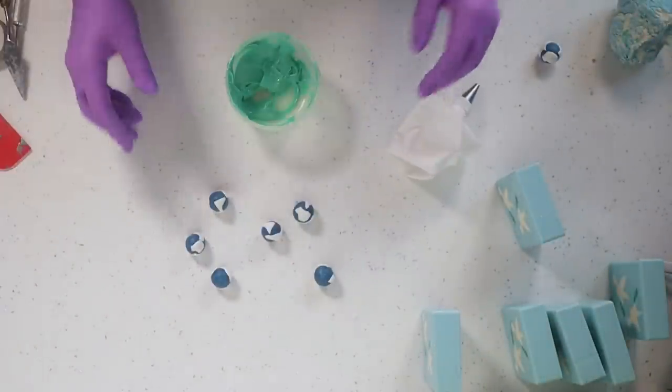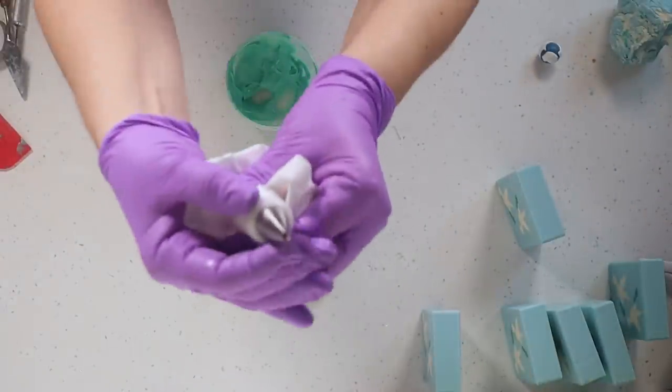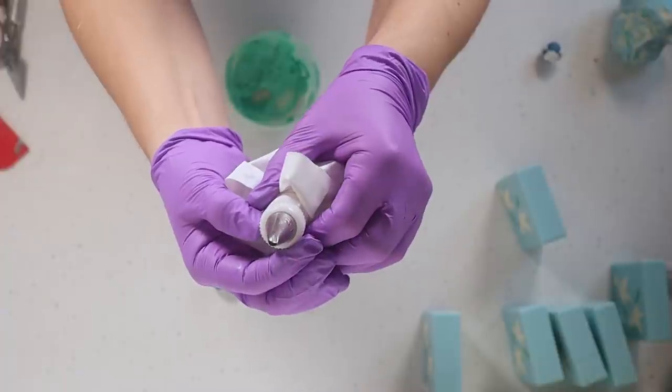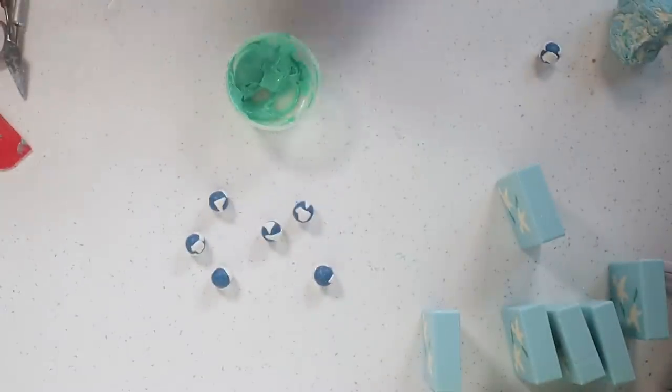I've made some soap piping—it's just my normal recipe that I've allowed to get a little bit thick. This tip is sort of like a curved little leaf tip; it's a number 59 tip that I'm going to be using.